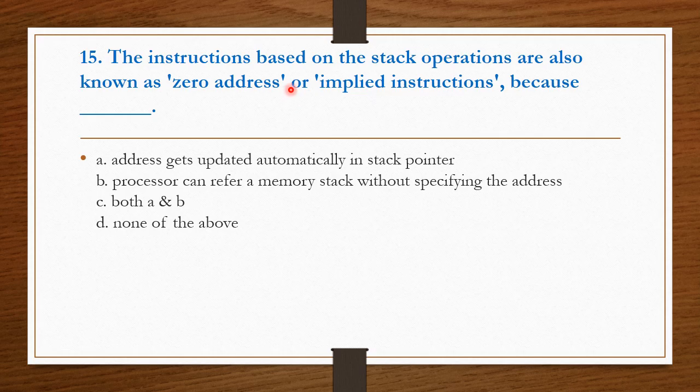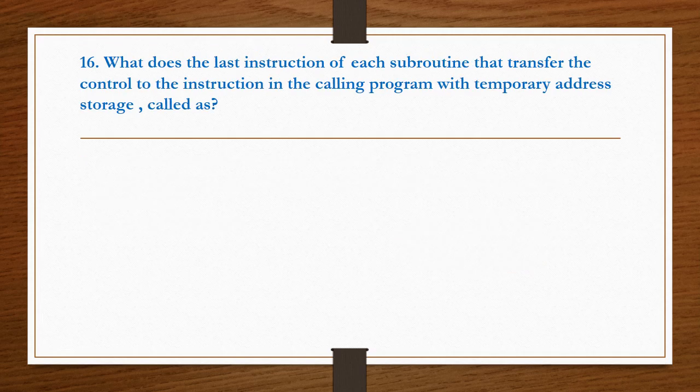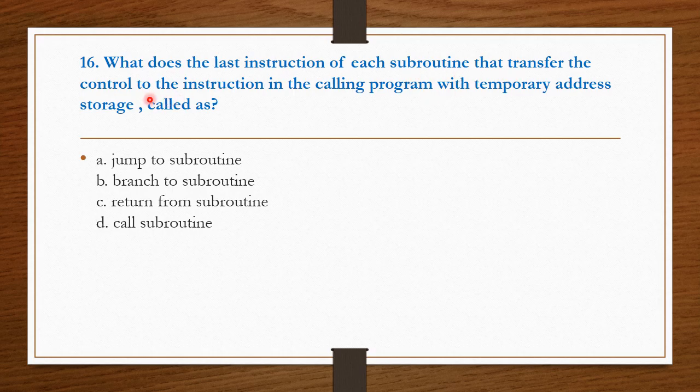Next question: the instruction based on the stack operations are also known as 0 address or implied instructions because address gets updated automatically in stack pointer. Processor can refer a memory stack without specifying the address. Both A and B is the correct answer. What does the last instruction of each subroutine that transfers the control to the instruction in the calling program with temporary address storage is called? Return from subroutine. Option C is the right answer.